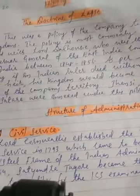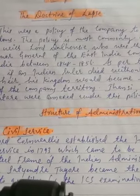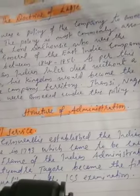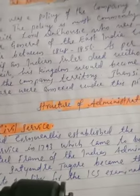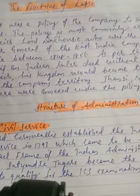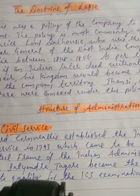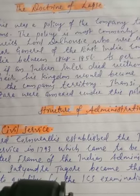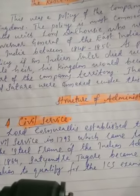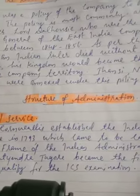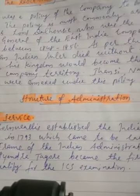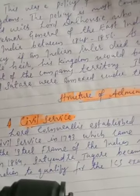Now we come to the structure of administration. We can study four points here: civil service, army, police, and judicial organization. I will explain one by one. First, civil service: Lord Cornwallis established the Indian Civil Service in 1793, which came to be called the 'steel frame' of the Indian administration.